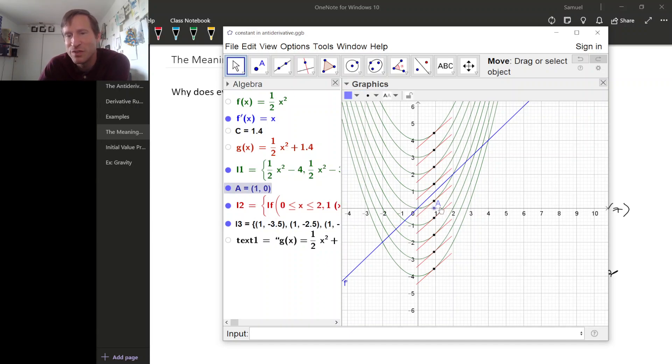Even if we move the point where we're looking at the slopes of the tangent lines, all of the slopes change but they change together.